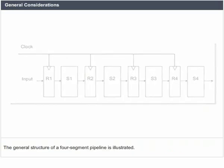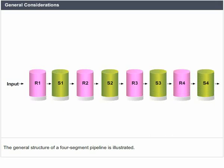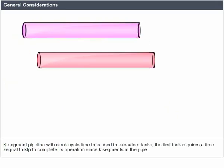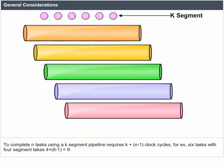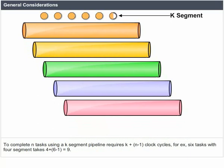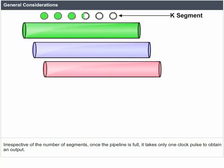General Considerations: The general structure of a four-segment pipeline is illustrated. A K-segment pipeline with clock cycle time TP is used to execute N tasks. The first task requires a time equal to K*TP to complete its operation. To complete N tasks using a K-segment pipeline requires K + N - 1 clock cycles. For example, six tasks with a four-segment pipeline takes 4 + 6 - 1 = 9 clock cycles. Irrespective of the number of segments, once the pipeline is full, it takes only one clock pulse to obtain an output.